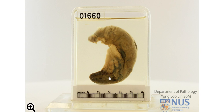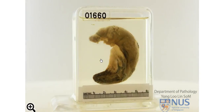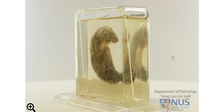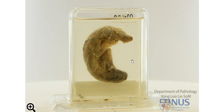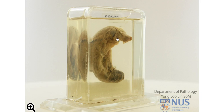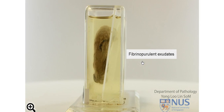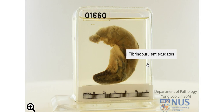We're looking inside the lumen here, and this is the cross section of the appendiceal wall. Looking at the serosa, we can see that there are some yellowish exudates on the surface that make the serosa appear opaque rather than translucent. We can appreciate the exudates a little bit better looking at this other surface, and under the microscope we would be seeing fibrinopurulent exudates — fibrin and numerous neutrophils — and this would be an acute inflammatory infiltrate or exudate.